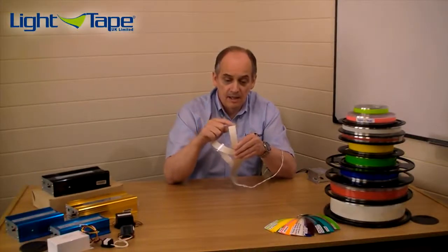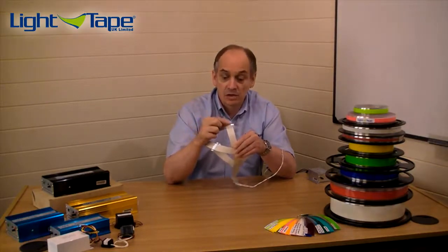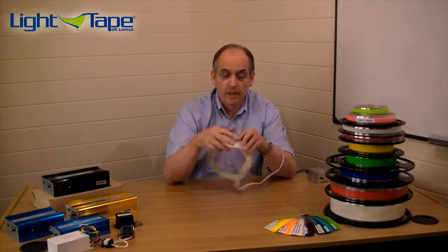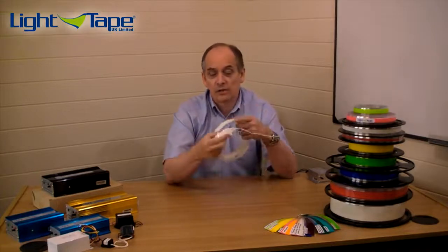And as you can see there, light tape has been sealed on the end with Aclar tape. Now, the Aclar tape is like a clear insulating tape. And we just literally fold it over the end for indoor product. For outdoor product, it's slightly different. We'll cover that later on in the tutorial.